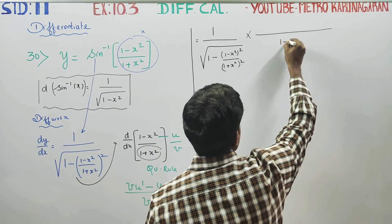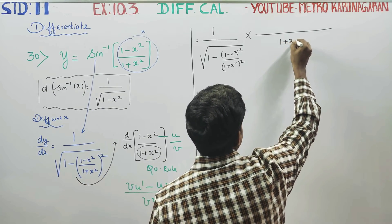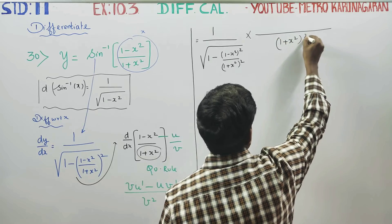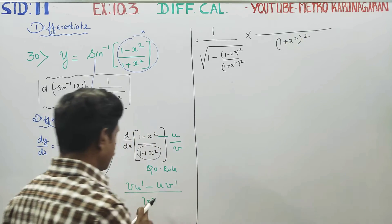Our v is (1 plus x square) whole square. We start with v square.